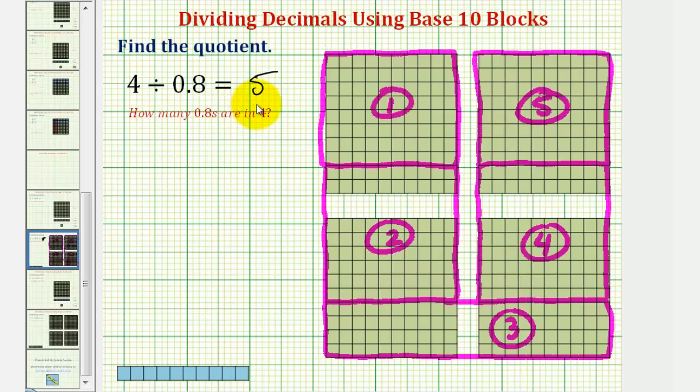Again, just to emphasize this, the corresponding multiplication problem would be five times eight-tenths equals four. Meaning, five copies of eight-tenths equals four. I hope you found this helpful.